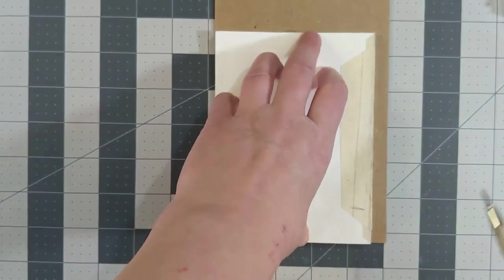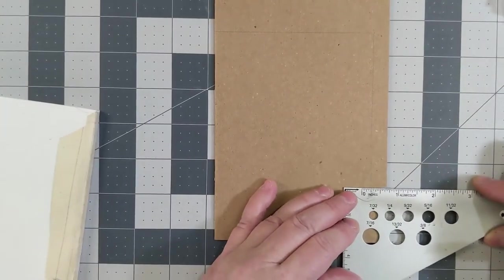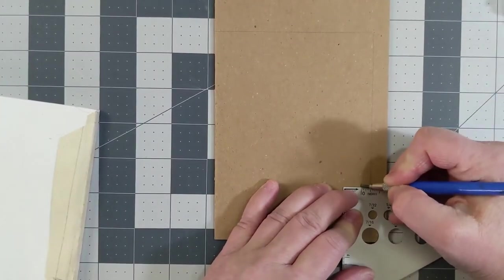Now it's time to cut your cover boards. I like to lay down the board and then put my text block on the board in the corner and then draw around it.